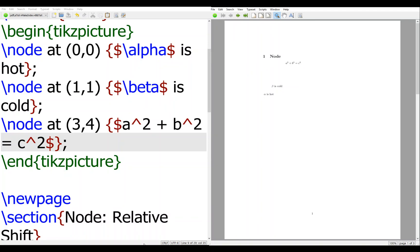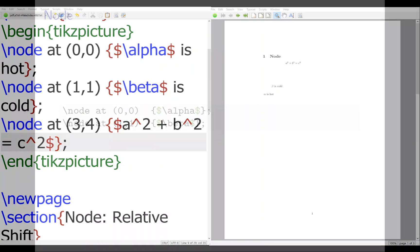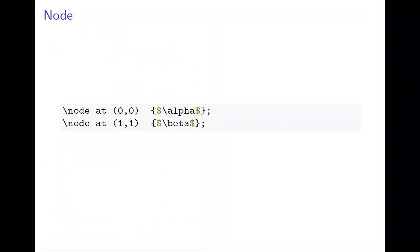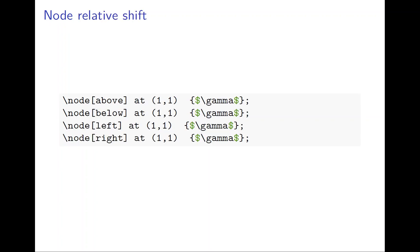Now this is almost done. But sometimes a useful trick is that (0,1) may not be exactly what you want. You want to move a little bit upward or downward, left or right. Usually what you do is call the relative shift. We can say above, below, left, or right. So for example, gamma at (1,1) will be positioned above, below, left, or right.